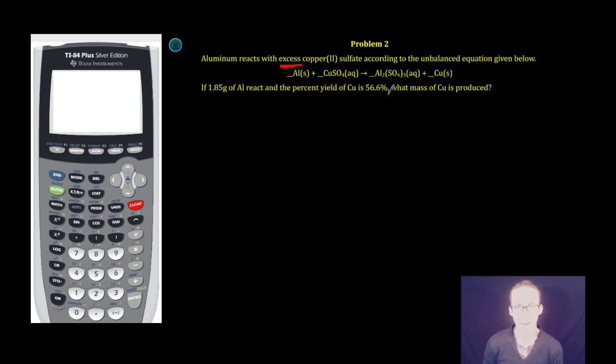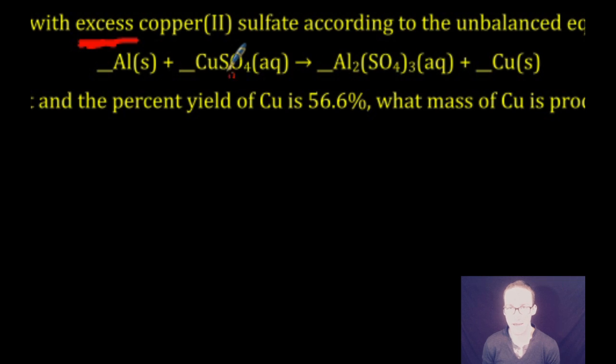Before I do any stoichiometry, I want to balance this. I'm going to keep my sulfate together as a polyatomic ion, as a single unit to make my life a little bit easier. I recognize I've got one sulfate on the reactant side, three on the product side, which means I need to put a coefficient of three here to balance out my sulfates.